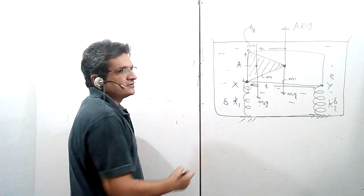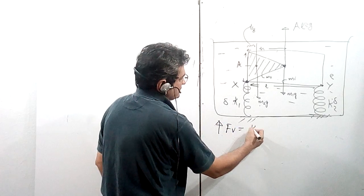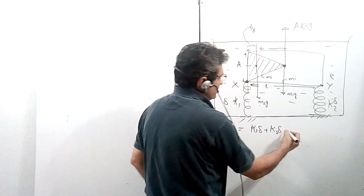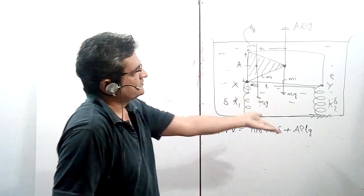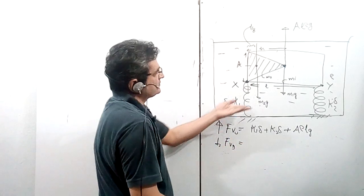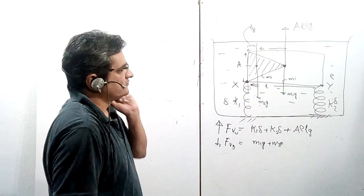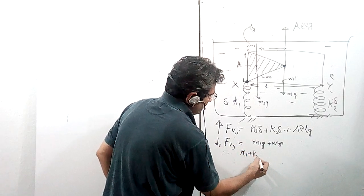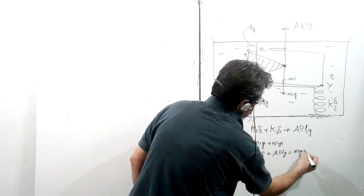The upward vertical forces are the spring forces: k1·delta plus k2·delta, plus the buoyant force A·rho·L·g. The downward forces are m1·g plus m2·g. Balancing these gives: (k1 + k2)·delta + A·rho·L·g = (m1 + m2)·g.